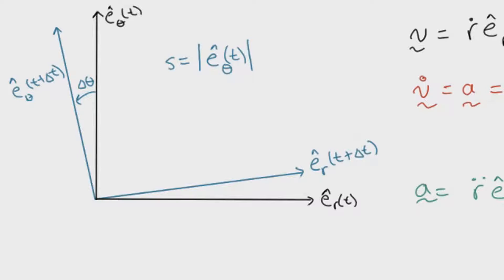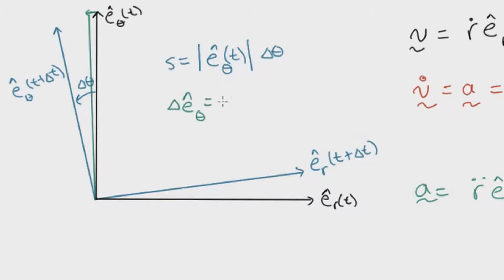Multiplying by the angle delta theta, we now let delta theta get really close to zero. As it approaches zero, we can see in this arc length that the change in e_theta points more and more straight to the left. So the change between the two unit vectors — that is, e_theta at t plus delta t minus e_theta at t — as delta t approaches zero becomes a very small vector.